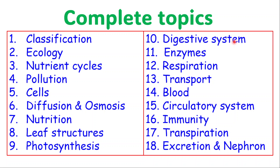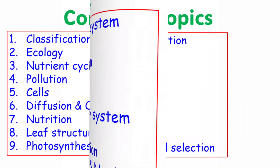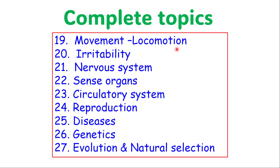We have the digestive system, enzymes, respiration, transport — specifically transporting in plants and animals — blood and circulatory system, immunity, and transpiration, which has been tested a lot. Excretion is important — pay attention to excretion and the structures of the nephron. Other topics include movement, locomotion, and the skeletal system, which has been tested quite recently. Irritability, nervous system, sense organs, circulatory system, reproduction, diseases, and genetics — pay attention to that as well. Evolution and natural selection — particularly natural selection.